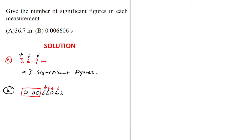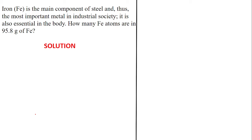So for this particular number, 0.006606, you only have four significant figures. Those are the four significant figures — that is the solution for this question.